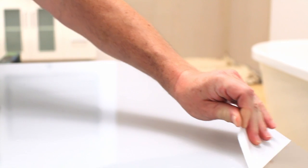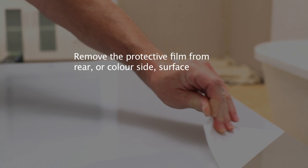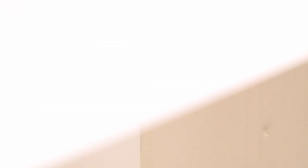You can now remove the protective film from the rear surface on the colour side in order to begin applying the adhesive. However, do not remove the protective film on the front clear side of the panel at this time.